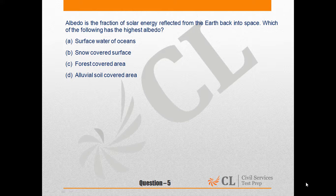Correct answer is B. Albedo is a measure of the reflectivity of the earth's surface. Because ice, especially with snow on top of it, has a high albedo. Water is much more absorbent and less reflective.